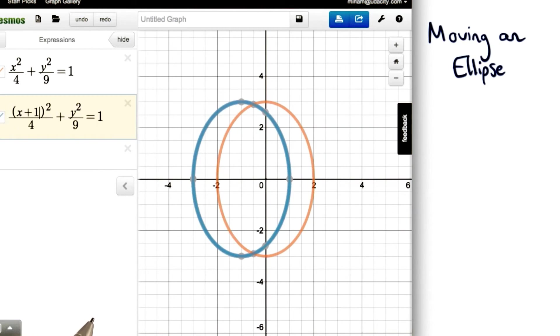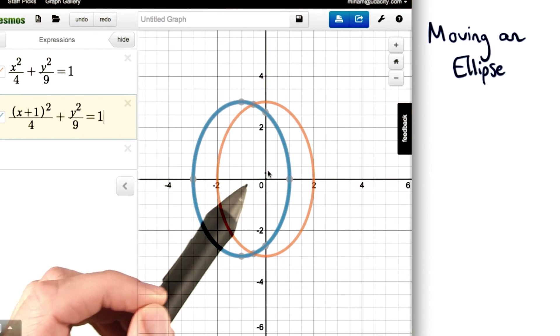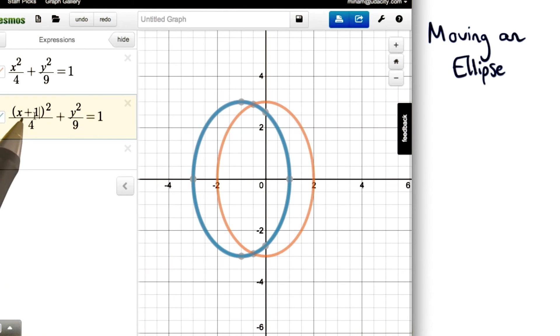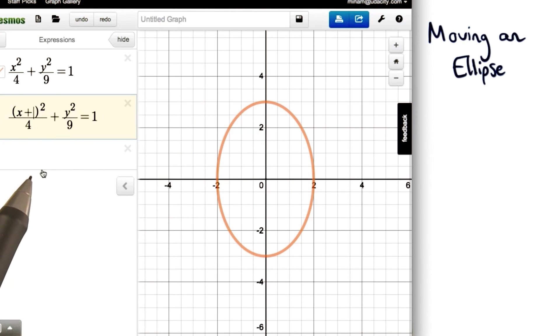But if it's a positive here, we're really moving to the left. So this new equation would be our original orange ellipse just shifted one unit to the left. And notice that we have plus one. A plus one really shifted it to the left. So plus two would shift it two units to the left, and plus three would shift it three units to the left.